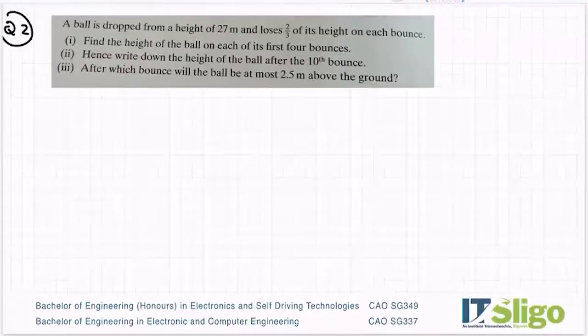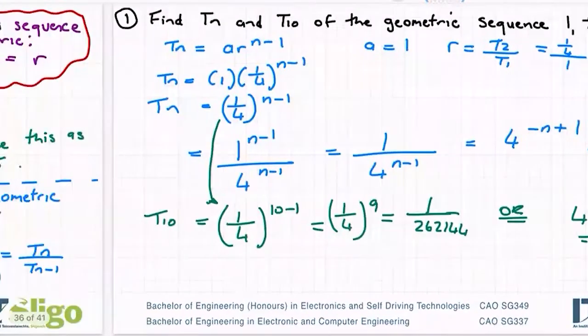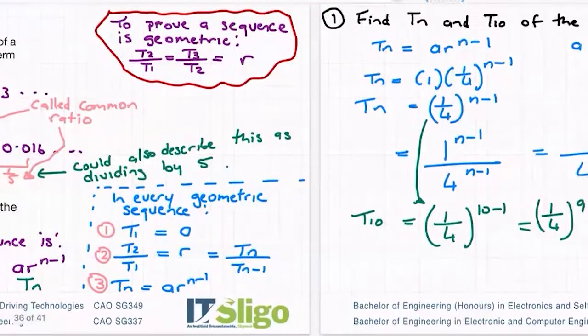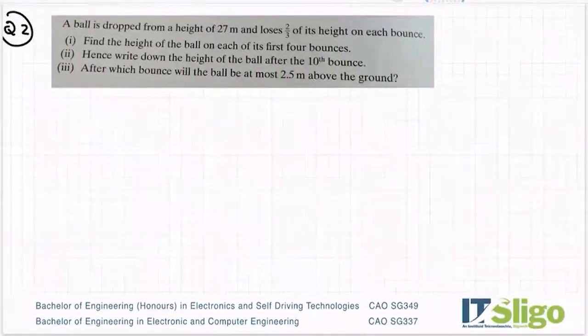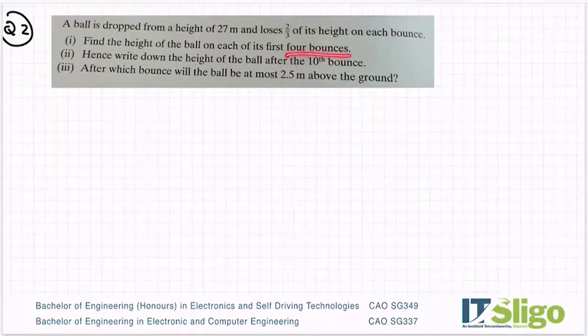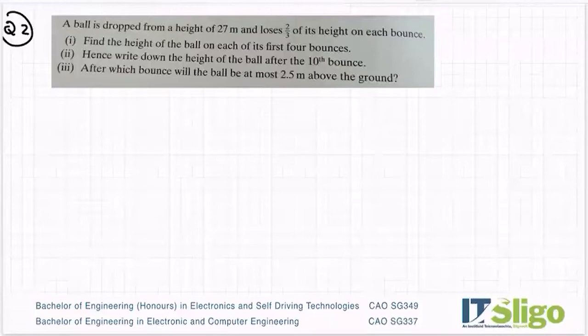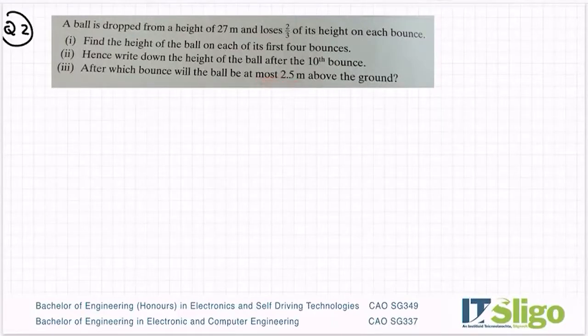Question two on our sequence and series examples in geometric sequences. A ball is dropped from a height of 27 meters and loses two-thirds of its height on each bounce. Part one, find the height of the ball on each of the first four bounces. Two, write down the height of the ball after the tenth bounce. After which bounce will the ball be at most 2.5 meters above the ground?